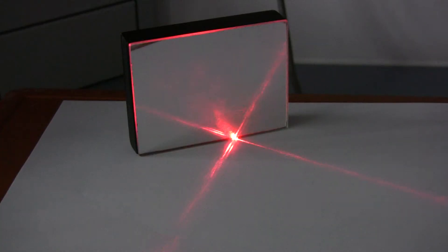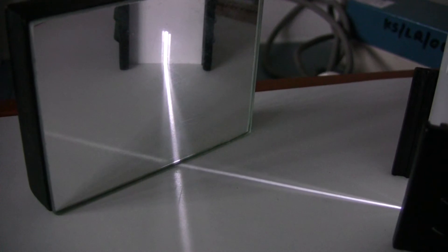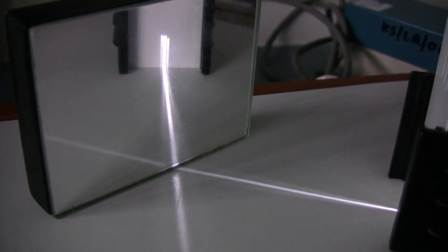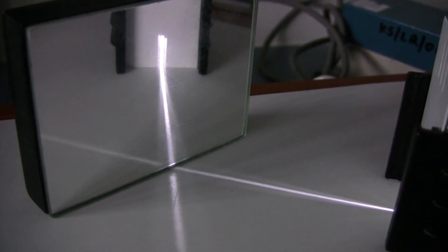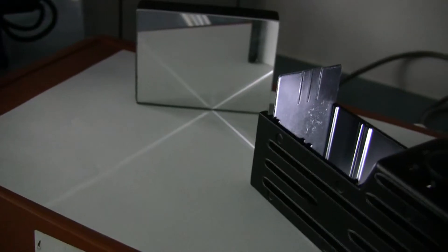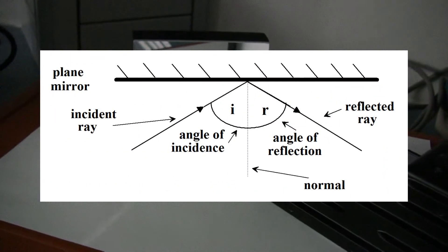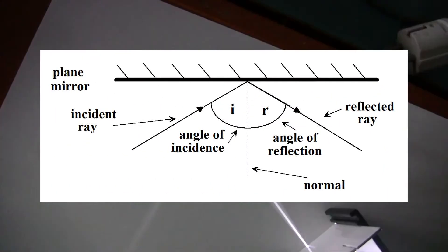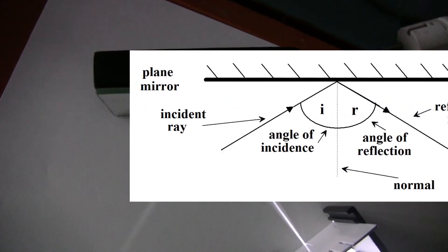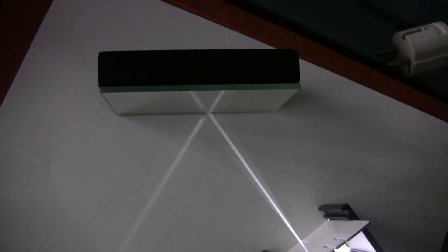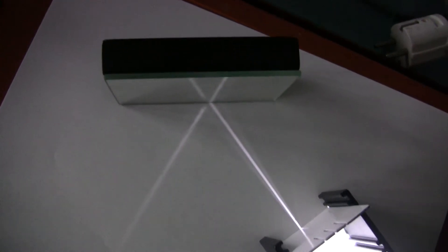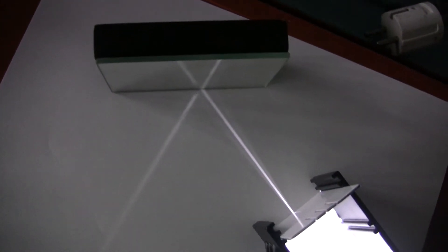All parallel rays of light incident on a shiny surface will reflect off at the same angle. This is called specular reflection. The angle of incidence is equal to the angle of reflection. This is the first law of reflection.